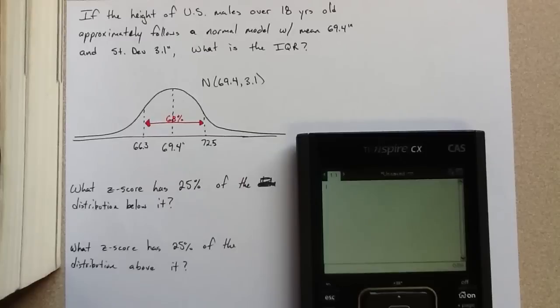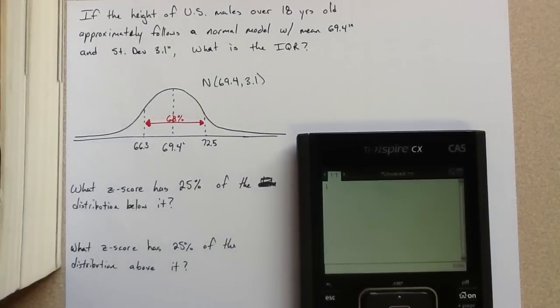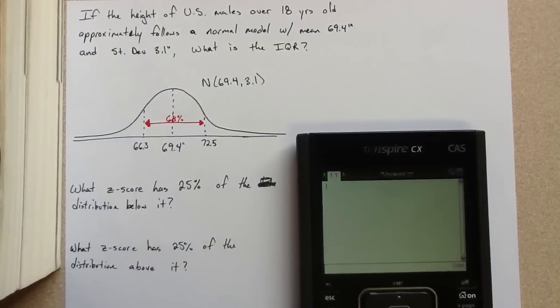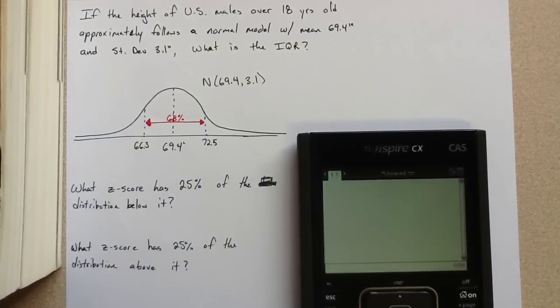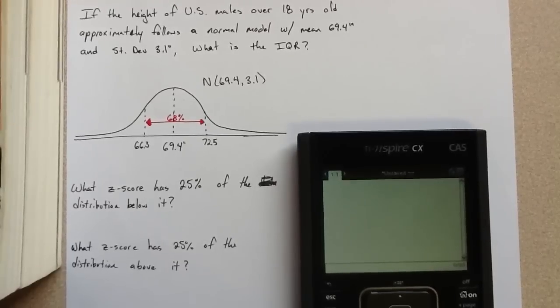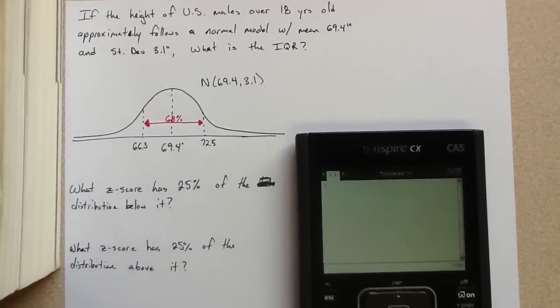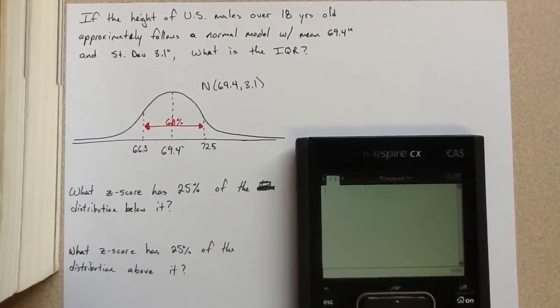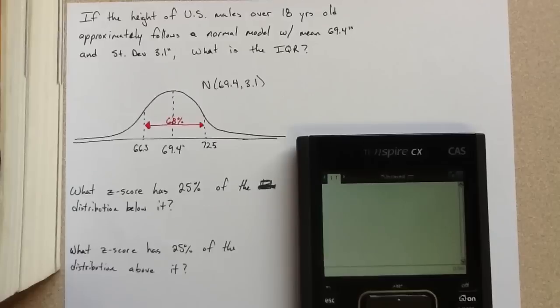In this video we're going to relate mean and standard deviation to median and IQR. So mean is a measure of center and standard deviation is a measure of spread. Likewise, median is a measure of center and IQR, interquartile range, is a measure of spread.